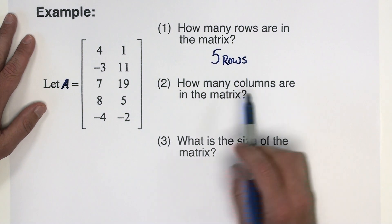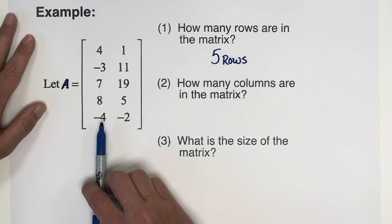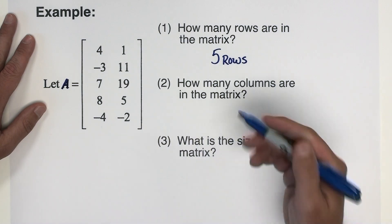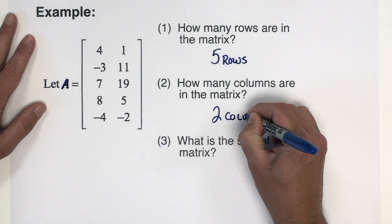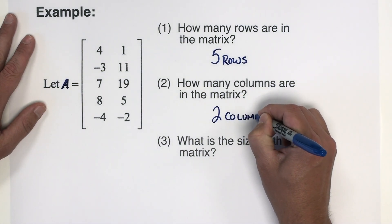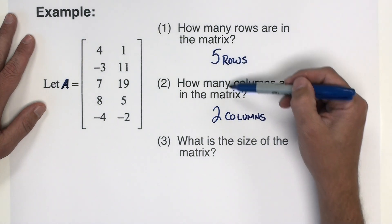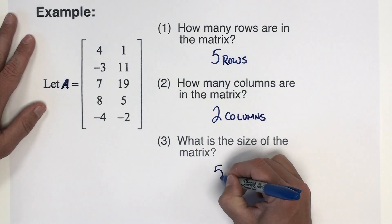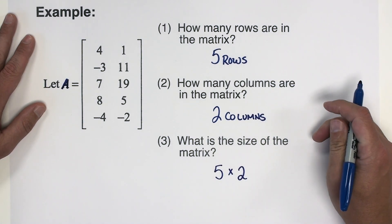How many columns are in the matrix? The columns go vertically. Here's a column of numbers and here is another column of numbers. We have two columns. And then what is the size of the matrix? We're always going to list the number of rows by the number of columns, so this is a five by two matrix.